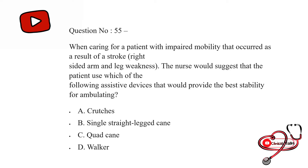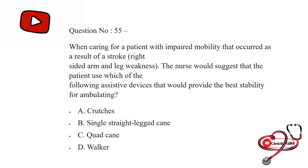When caring for a patient with impaired mobility occurring as a result of stroke with right-side arm and leg weakness, the nurse would suggest that the patient use which of the following assistive devices to provide the best stability for ambulation? Option first: crutches; second: single-legged cane; third: quad cane; last: walker. The correct answer is C — quad cane.